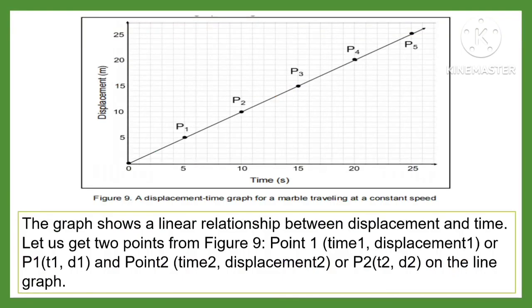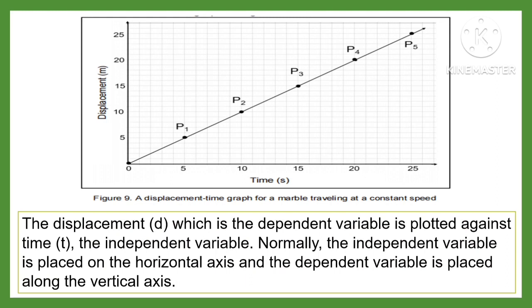The graph shows a linear relationship between displacement and time. Let us get two points from Figure 9. Point 1 is time 1, displacement 1, or P1(t1, d1). Point 2 is time 2, displacement 2, or P2(t2, d2) on the line graph. The displacement D, which is the dependent variable,